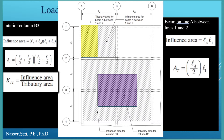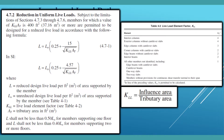Similarly for columns, the tributary area goes halfway to the next column, but the influence area can go all the way to the other side. We use K_LL as a factor to calculate a reduced live load. One limitation: the live load must be less than 100 pounds per square foot, and L shall not be less than 0.50 L₀ for members supporting one floor, or not less than 0.40 L₀ for multi-floor members. There's also a table that gives you K_LL values directly.